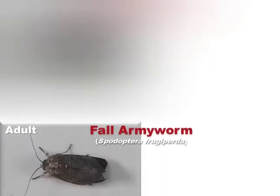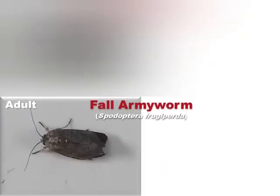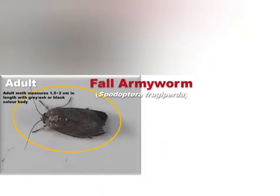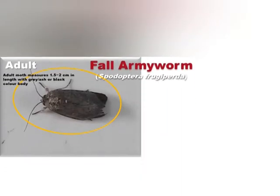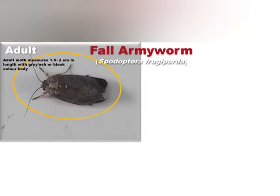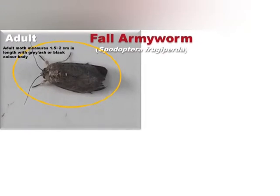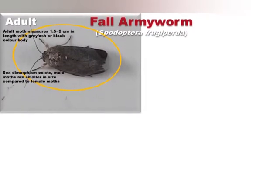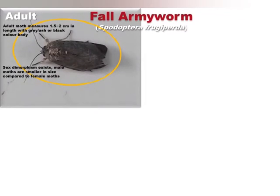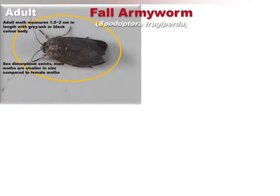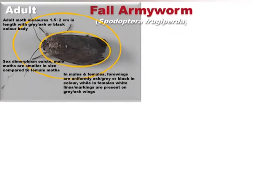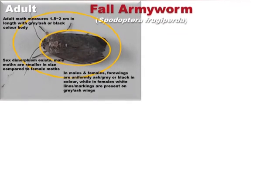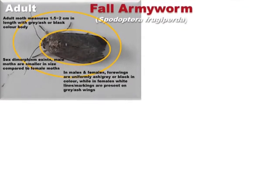In females, the uniformly black, gray, or ash-colored forewings are interspersed with white or gray lines. In both males and females, the hindwings are cream or silver in color.